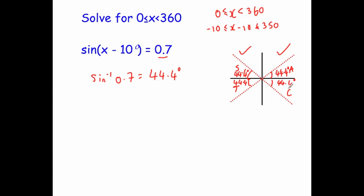Let's get our angles. Let's start off and check between 0 and minus 10. There's no solutions there. So let's go around in the positive direction from 0 to 350. Our first solution will be 44.4, so x minus 10 equals 44.4. Our next solution will be 180 minus 44.4, which equals 135.6 degrees.